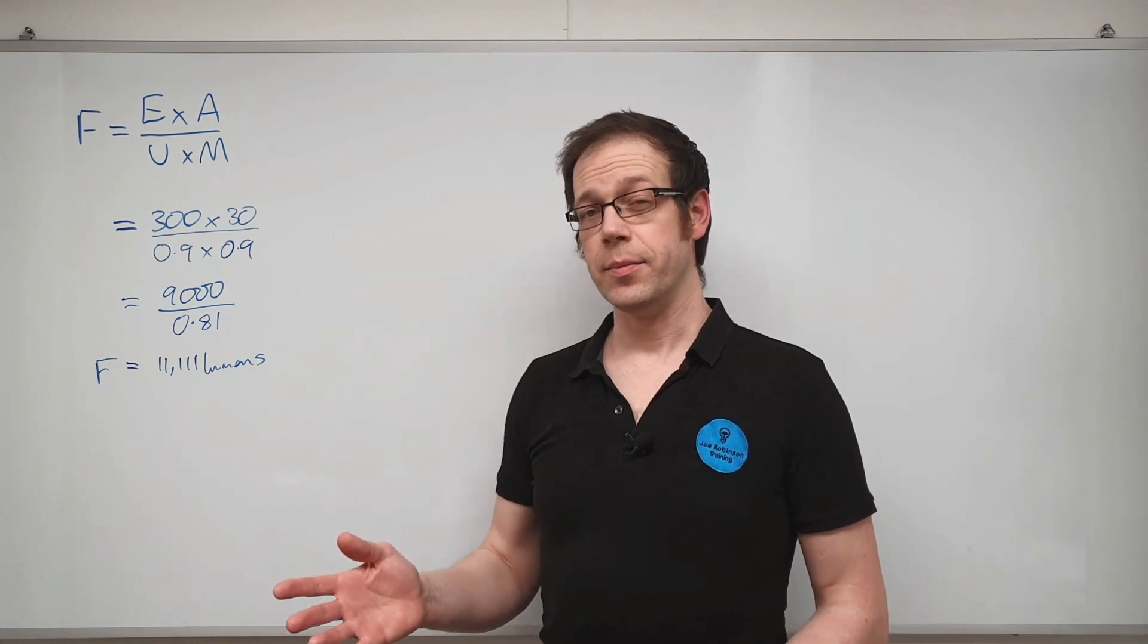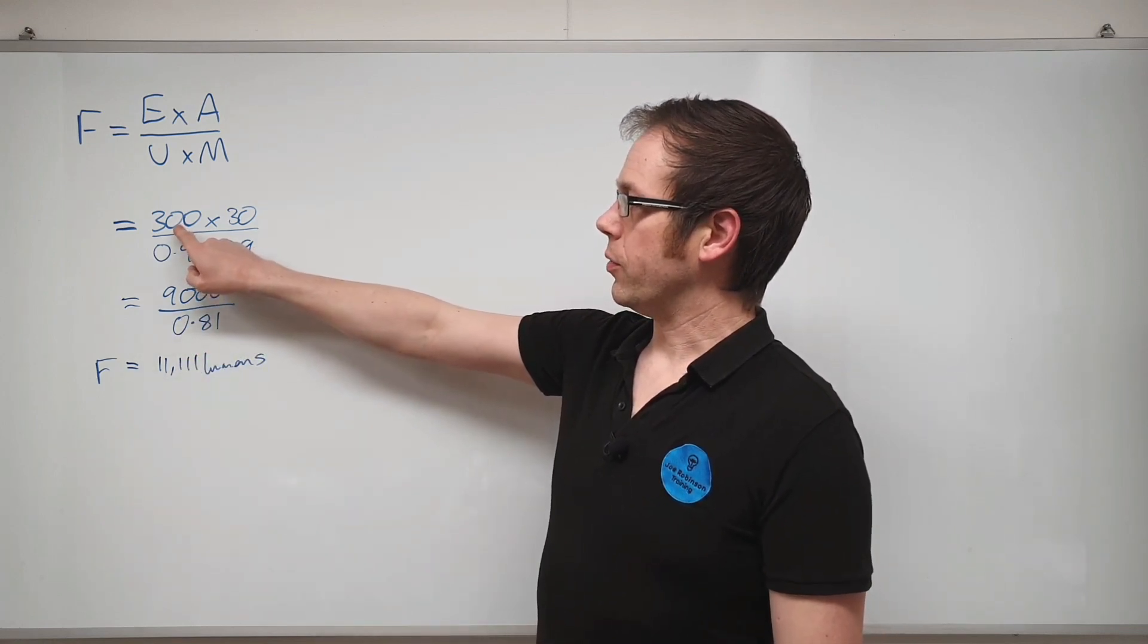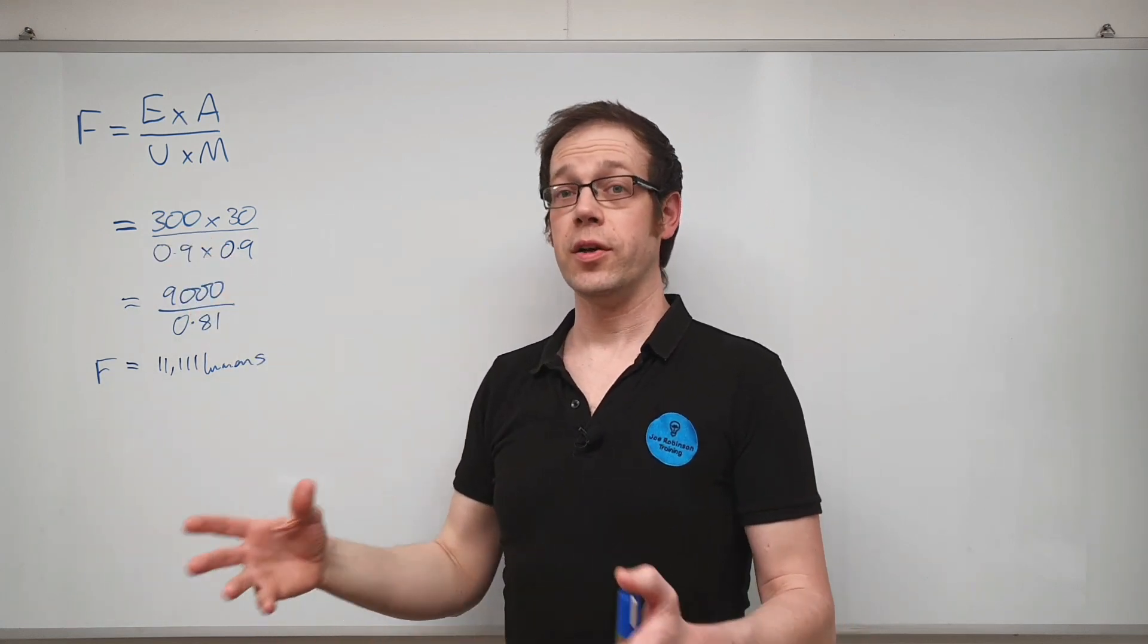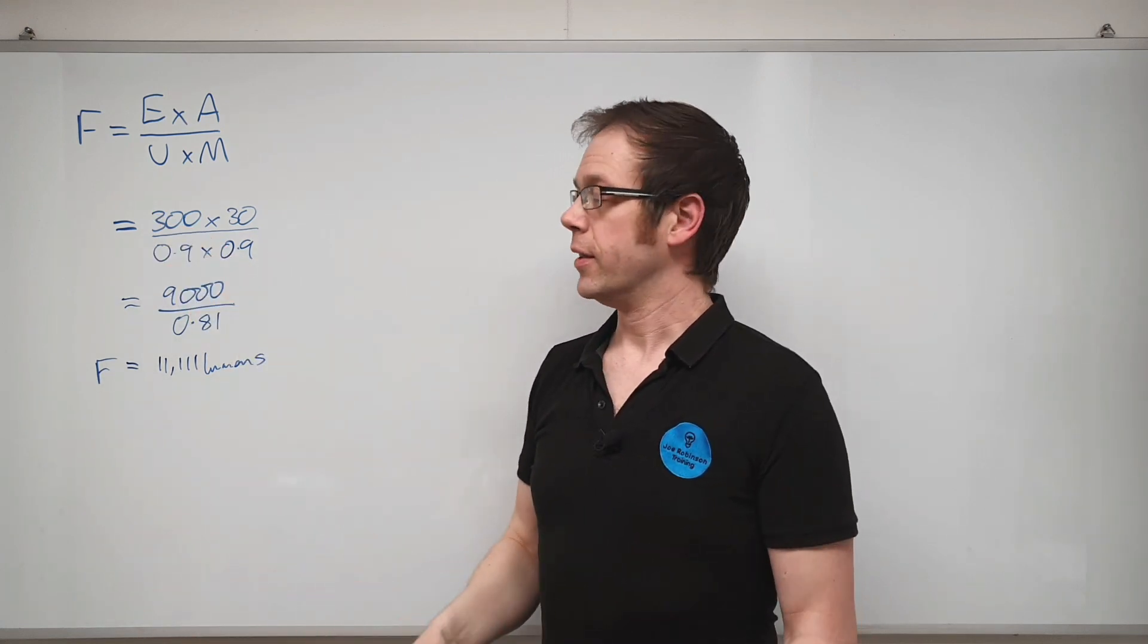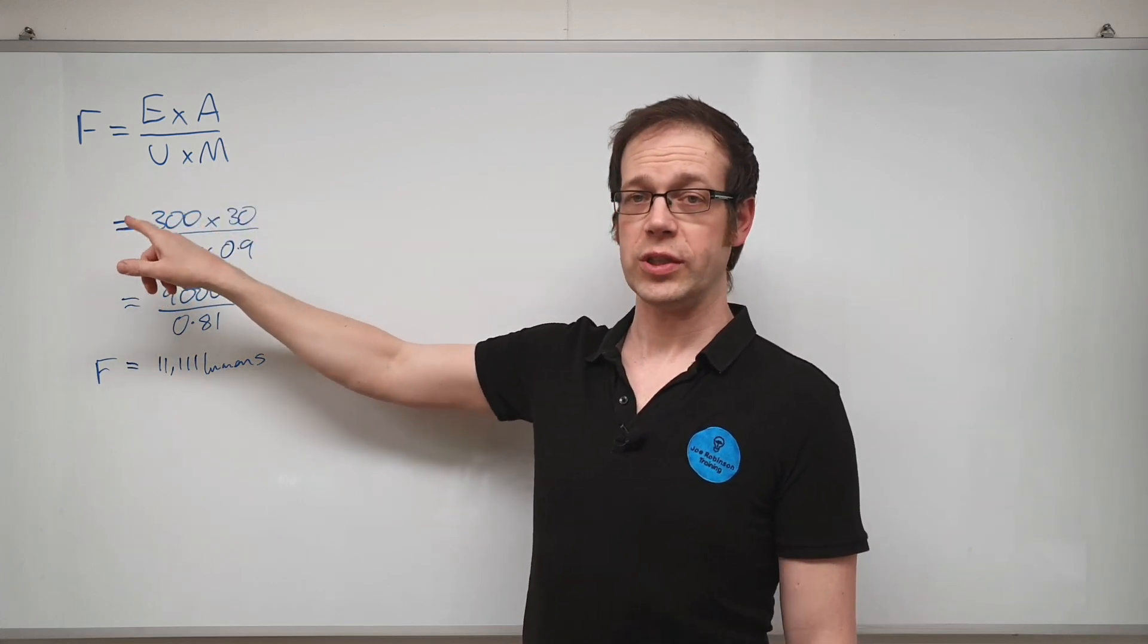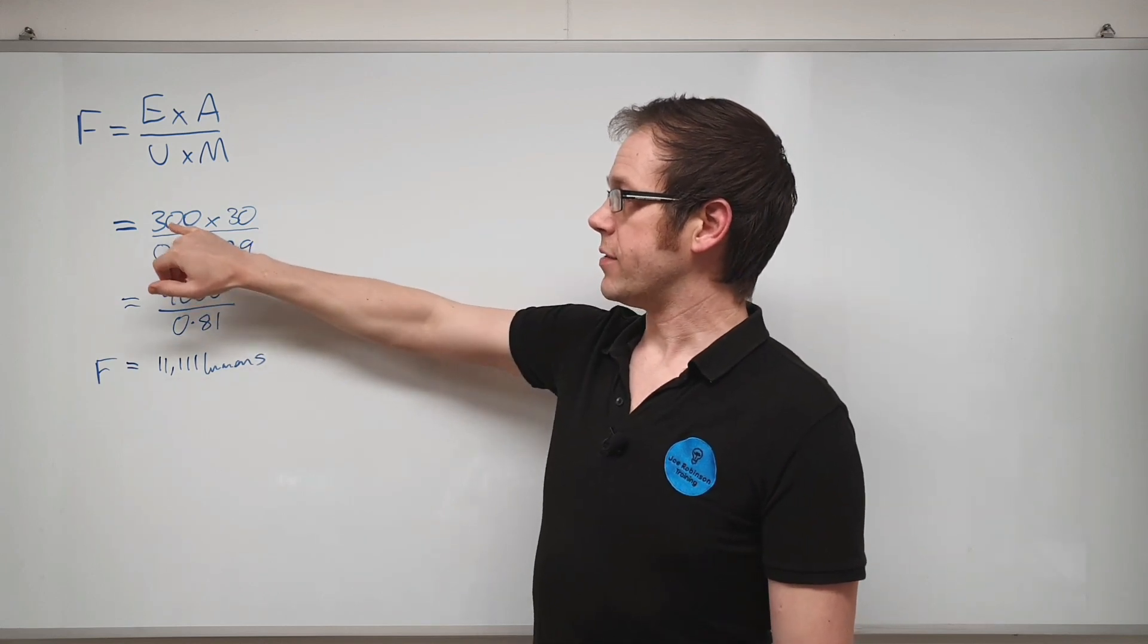Now what starts to happen if you start to juggle with these numbers a little bit? Let's mix it up a little bit. Let's say that we want to make the surfaces brighter, so let's say that the classroom is actually going to be used for night classes. We need to increase the illuminance on those surfaces, so that's now going to be 500 lux, which is a typical value for that kind of application.